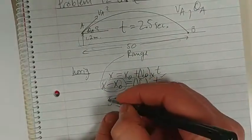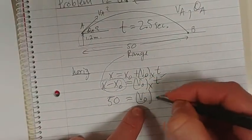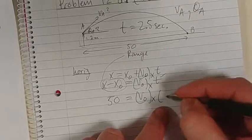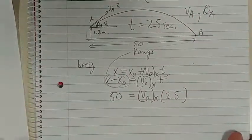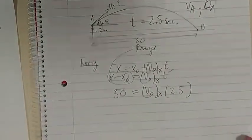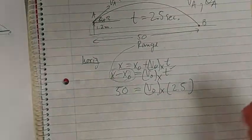And we've got V0X, and we've got time, which is 2.5. Okay, so we're getting somewhere. Very good.